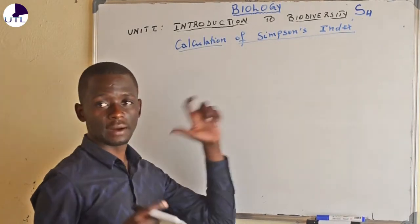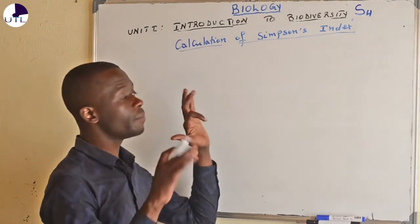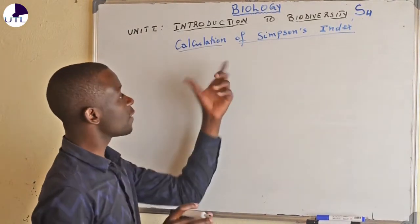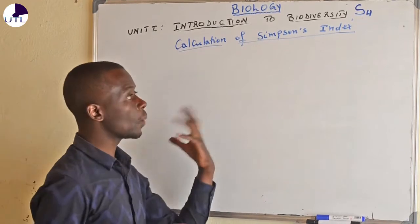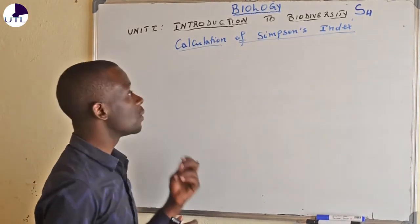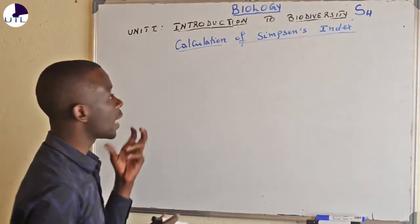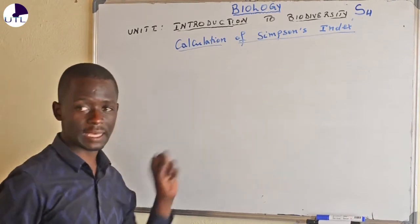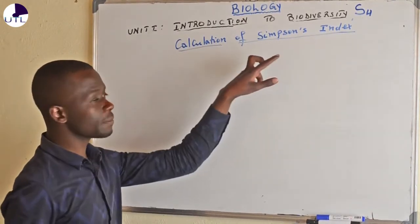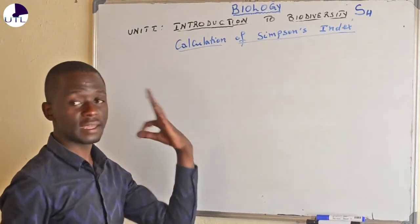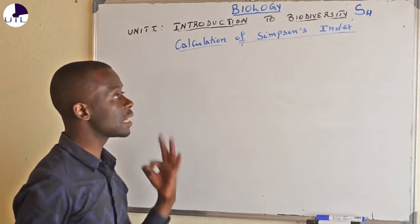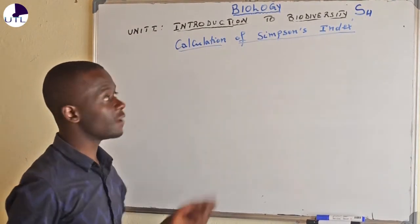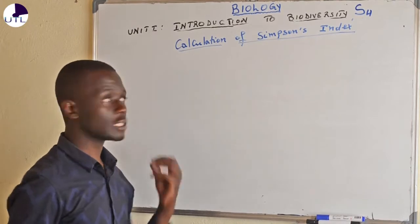Biodiversity is calculated in many ways, but we have three ways which are very important. We can use what we call the Simpson's Index. Using this Simpson's Index, we have three indices that we use while calculating biodiversity.